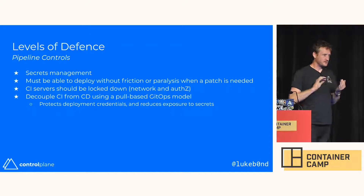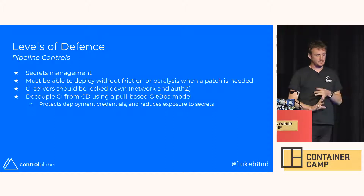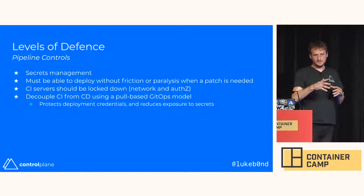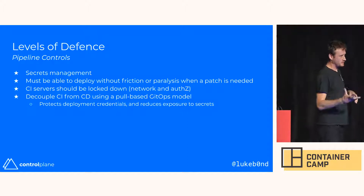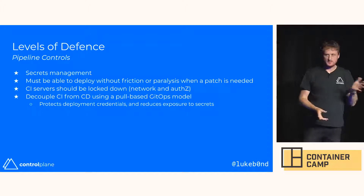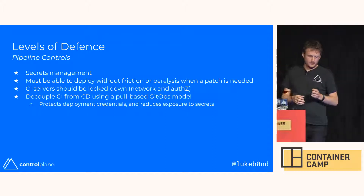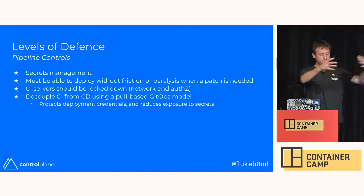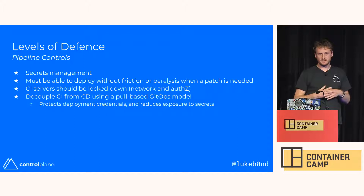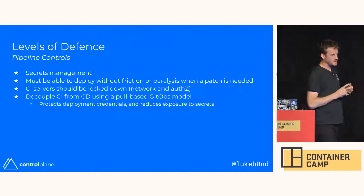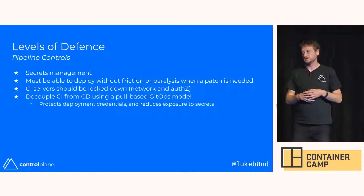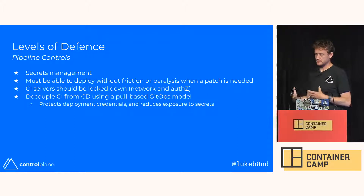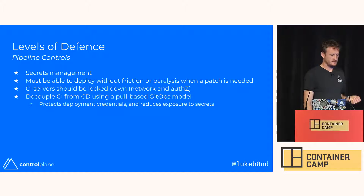A CI server should be locked down. In a push-based deployment model it will have all your secrets — application secrets and deploy secrets — so isolate it in its own VPC, not accessible from the internet without a VPN. Ideally, don't use a push-based deployment model at all. A pull-based, GitOps-type approach protects deployment credentials because Jenkins or whatever you use doesn't need to have them, so if it's compromised there's less to find.